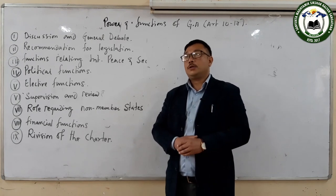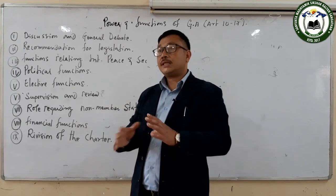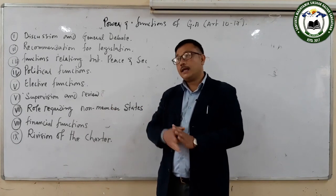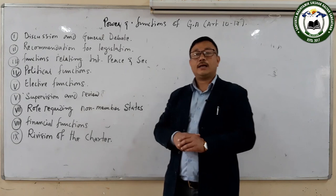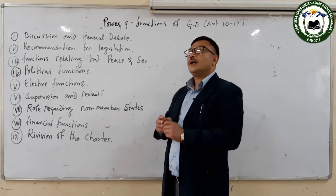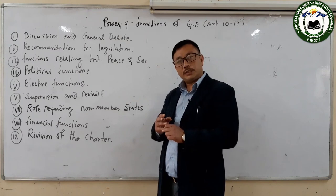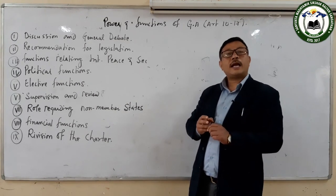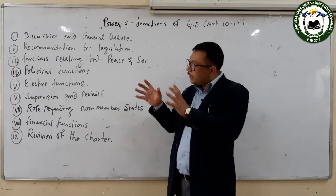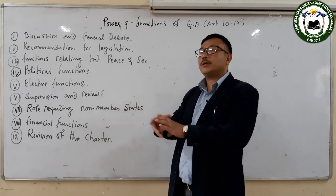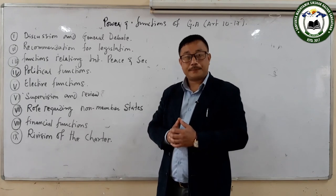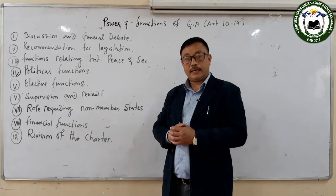The United Nations Organization has six specialized organs: number one is General Assembly, number two is Security Council, number three is Economic and Social Council, number four is Trusteeship Council, number five is International Court of Justice, and number six is Secretariat. Among these six organs of the United Nations, today we are going to discuss about the General Assembly.